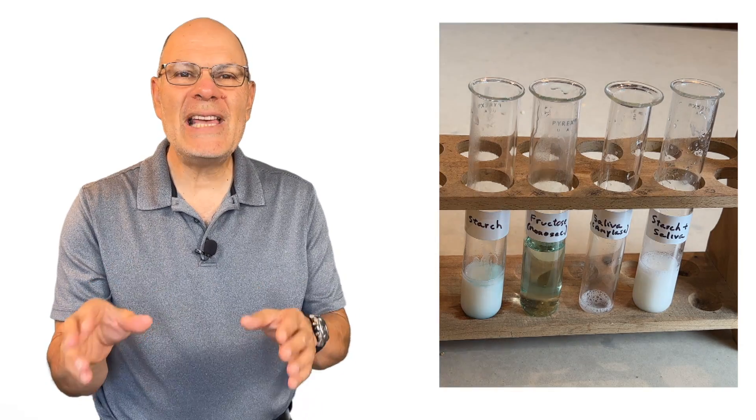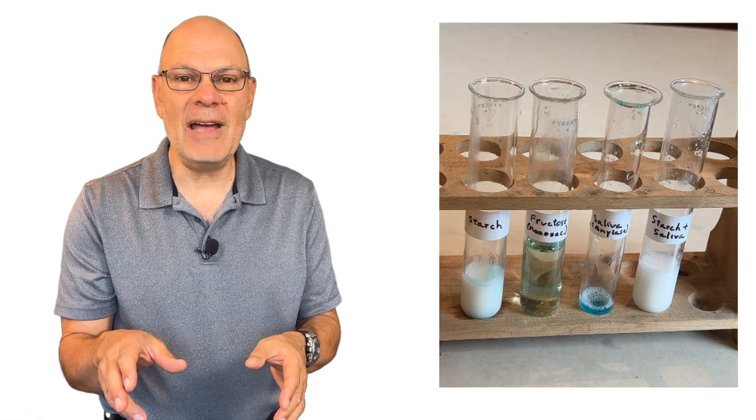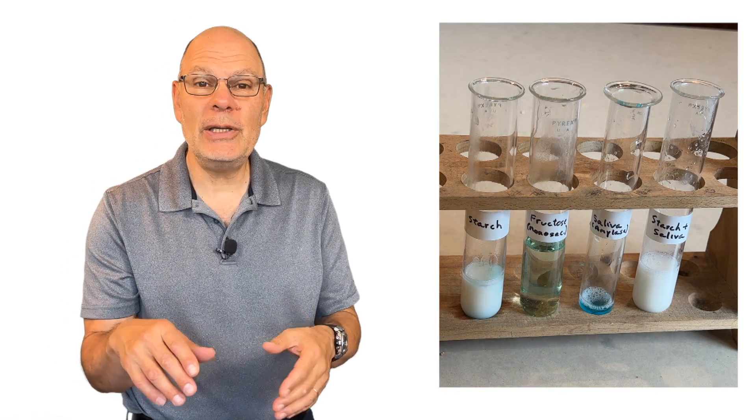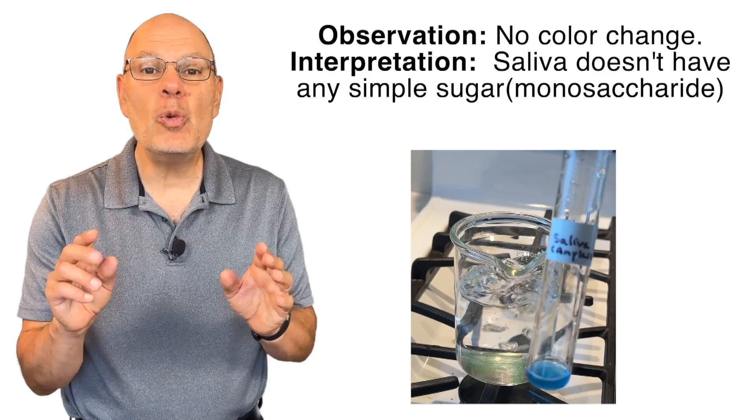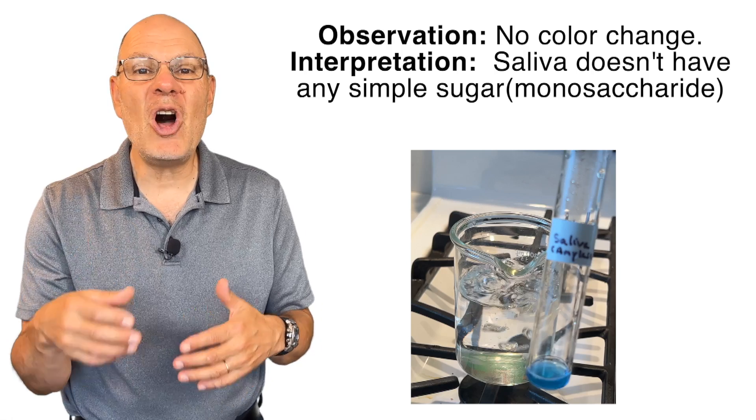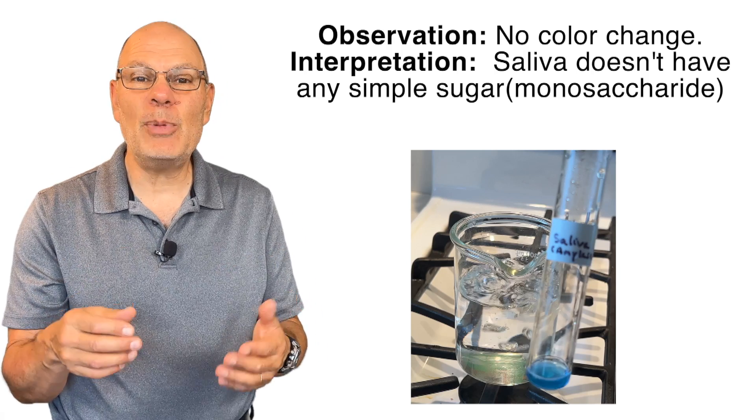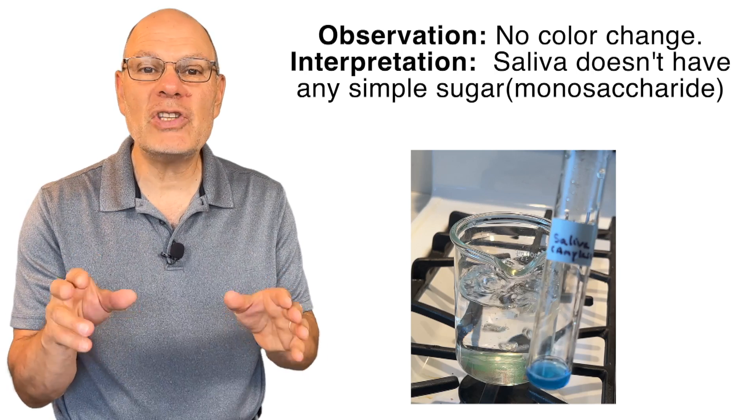While we're waiting, let's test the test tube that just has saliva. I add Benedict's solution to it. You can see it's blue. And then I heat it, and you'll note that there's no color change. So we can conclude that saliva on its own doesn't have any simple sugar. It doesn't have any monosaccharide.